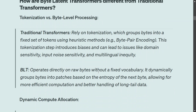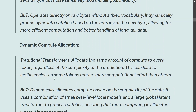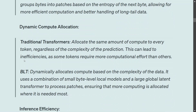In the case of BLT, it directly works on raw bytes without a fixed vocabulary, so there is no need for manual intervention to specify language delimiters. Regarding dynamic compute allocation: traditional transformers allocate the same amount of compute to every token regardless of complexity, leading to inefficiency. BLT, on the other hand, allocates compute based on the complexity of the data, making it more efficient.